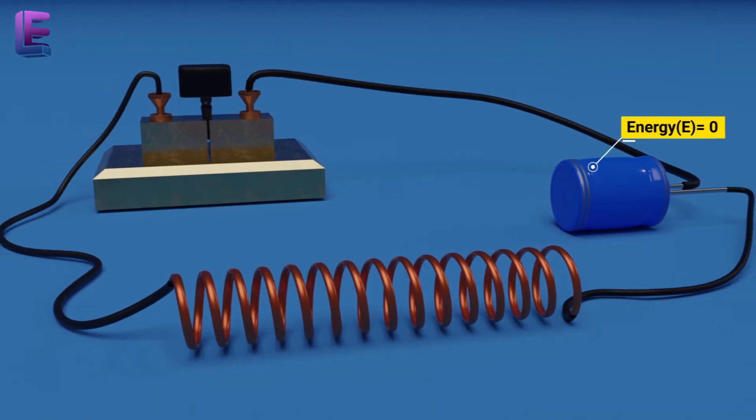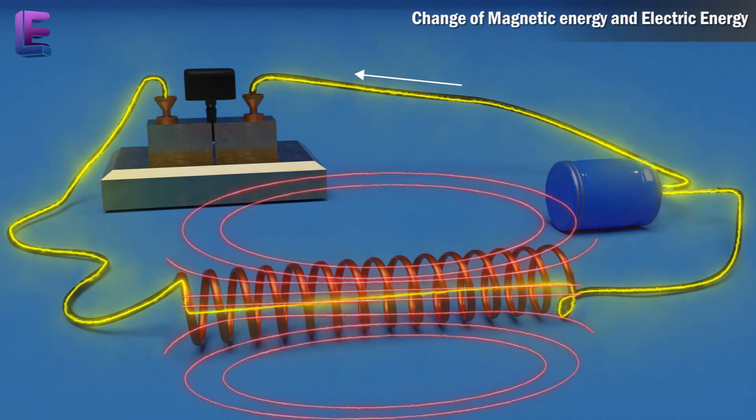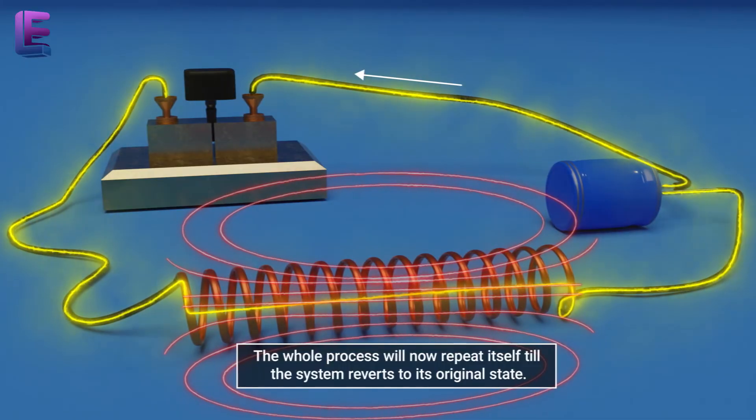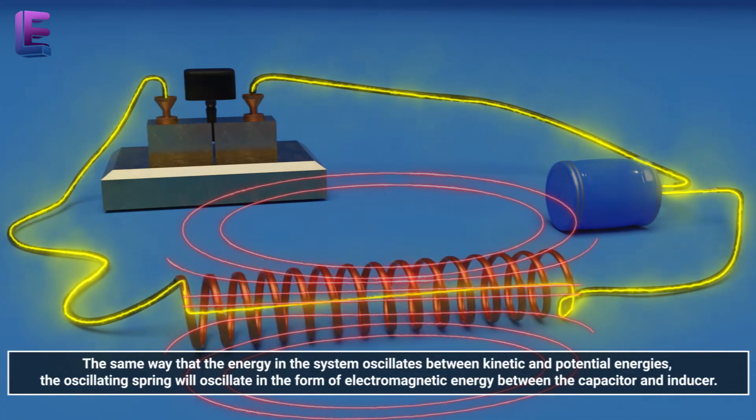As a result, the capacitor now has no charge and hence no energy. Therefore its energy is zero. Now, the current flow charges the capacitor, but it is charged with the opposite polarity. The whole process will now repeat itself till the system reverts to its original state. The same way that the energy in the system oscillates between kinetic and potential energies, the oscillating spring will oscillate in the form of electromagnetic energy between the capacitor and inducer.